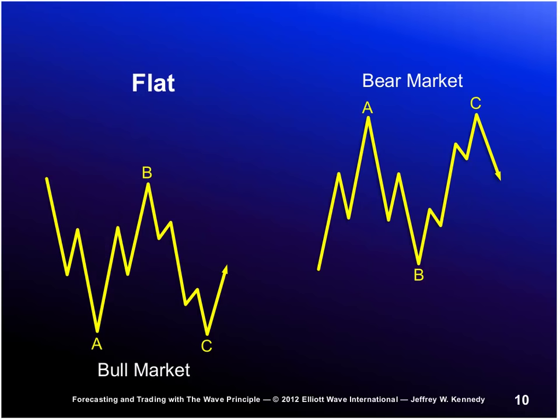The flat is a 3-3-5 pattern: wave A subdivides into three waves, wave B is also three waves, and then we have a five-wave decline in wave C. A flat correction can form in wave 2 or wave 4, wave B, or possibly even as an X wave if you have a complex correction. Finally, the contracting triangle is a pattern most everybody is familiar with from reading Edwards and McGee. These chart patterns fit very, very nicely within the context of the wave principle.